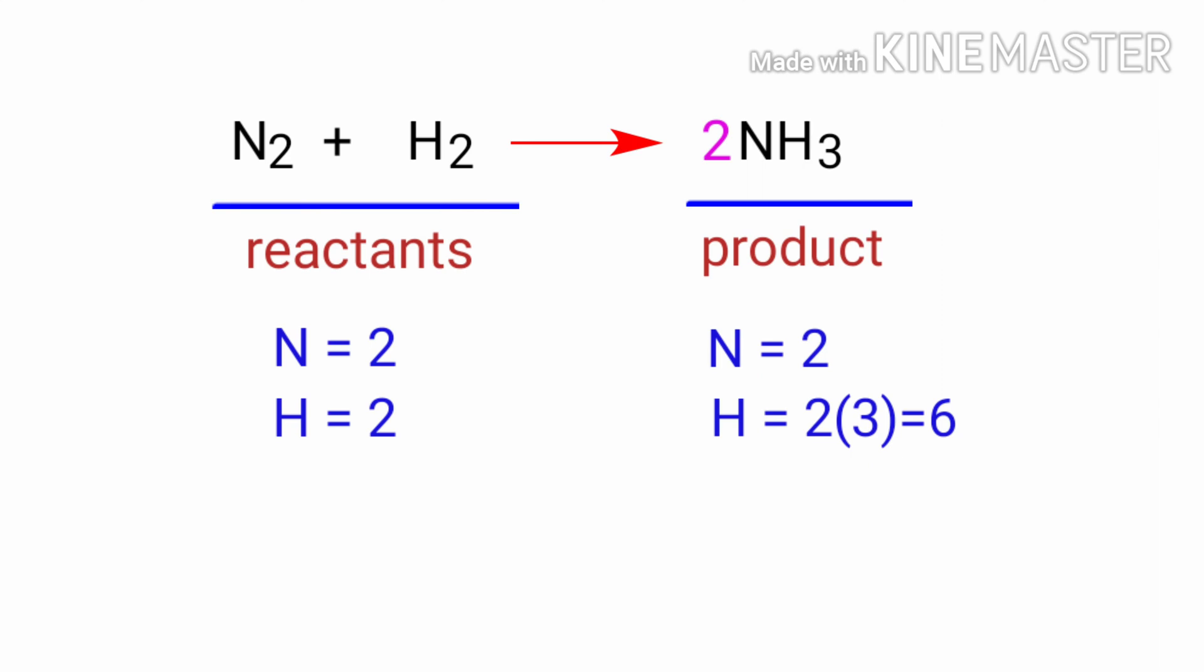The Nitrogen atoms are balanced. Now we need to balance the Hydrogen atoms. To do this, we need to put a coefficient of 3 in front of H2.